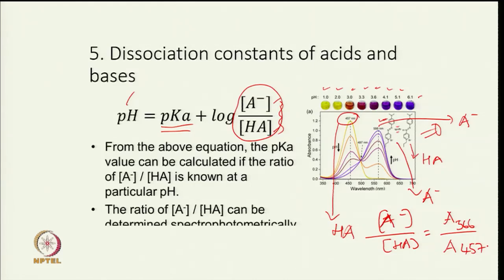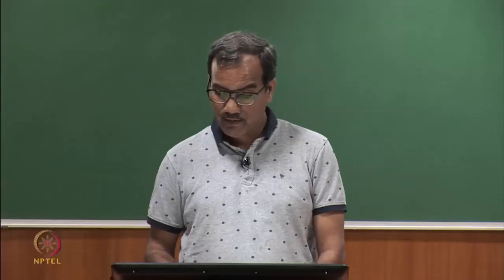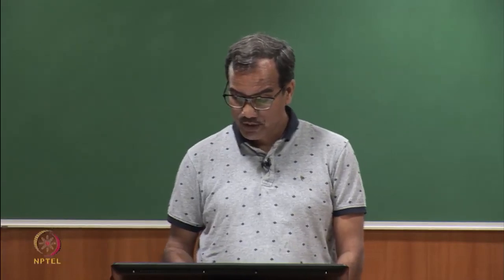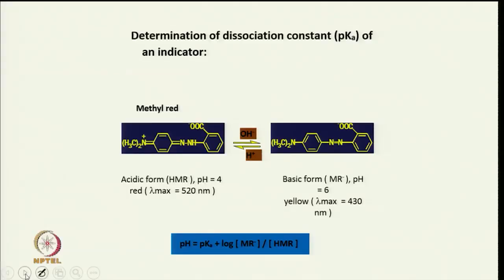The A⁻ concentration divided by HA equals absorbance at 566 nm divided by absorbance at 457 nm. Just by doing that, we can calculate the salt-to-acid ratio and based on that we can calculate the pKa value at a particular pH. For example, we can calculate the pKa value for methyl red at a given pH.